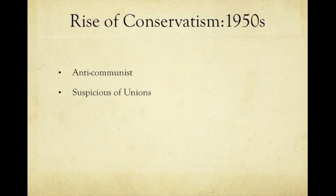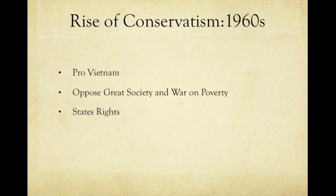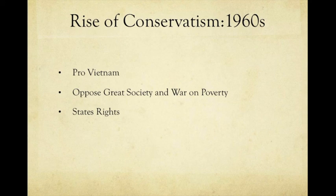In the 1950s, conservatives were anti-communist and suspicious of unions — right in the heart of the Second Red Scare. In the 1960s, they were pro-Vietnam. They opposed the Great Society and the War on Poverty, seeing these as socialism and welfare. They didn't believe that government should be involved in interfering in the private lives of people, so they were pro-state's rights as well.